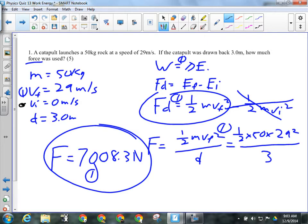So for number one, give them a mark first for their givens. Mass was 50 kilograms, final velocity was 29, initial velocity was zero, distance was 3 meters. Next mark, recognizing it was a work energy theorem question, work equals change in energy. Maybe they had force times distance equals final energy minus initial energy, which is the same thing.